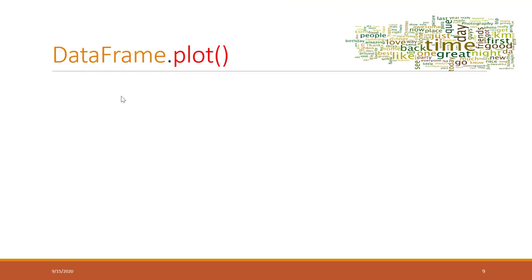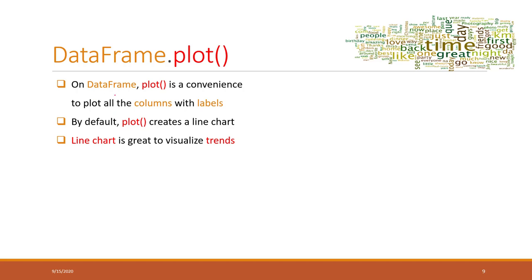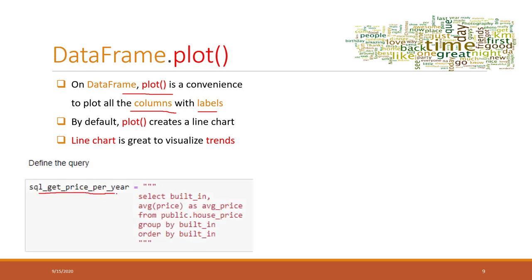In the Python class, we also mentioned the data visualization functions in a DataFrame, which is the plot function. The plot function is actually a wrapper of the matplotlib library, but we can use plot directly on a DataFrame. Plot can create visualizations with column labels, and by default it creates a line chart. Next semester we'll talk more about visualizations — line charts are great to visualize trends of variables. Let's see one example: we'll define a query to get the average price per year.